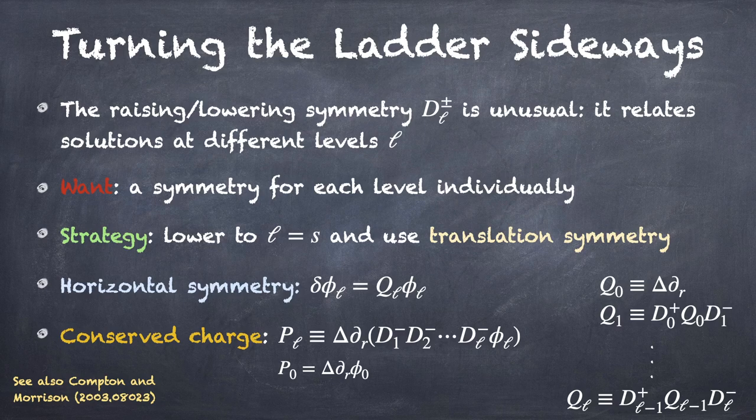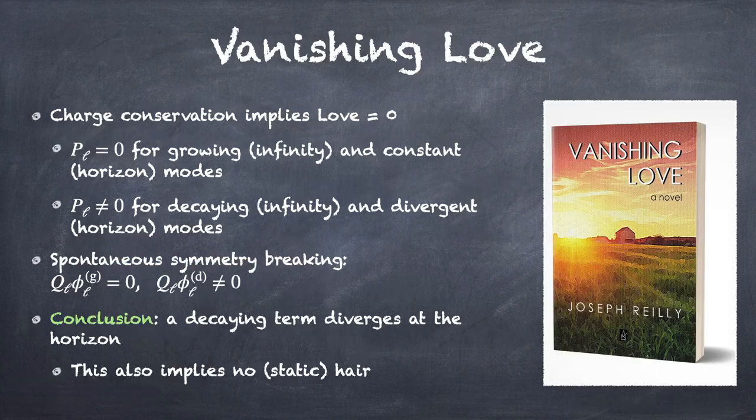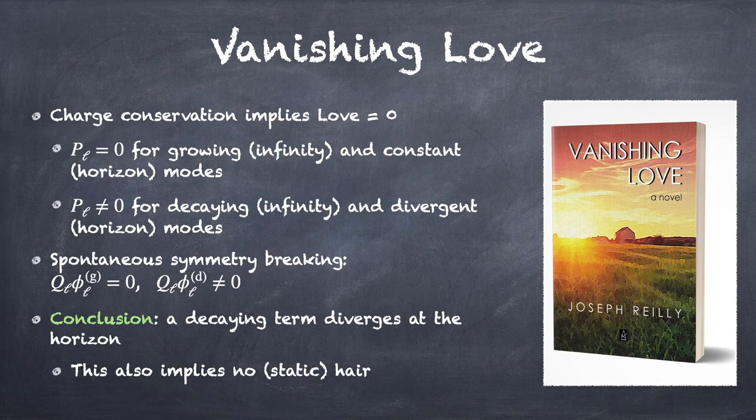And then you can do the usual Noether procedure also to find these conserved currents P_L. And from there, you get now the vanishing love numbers because it turns out that conservation of this current tells you precisely what we wanted to find before. In particular, the charge vanishes for the growing mode at infinity, but not for the decaying mode. And it vanishes for the constant mode at the horizon, but not for the divergent mode. And so by imposing a constant solution at the horizon, nothing blowing up, you get pure growing mode at infinity. And moreover, you can see this actually in terms of spontaneous symmetry breaking, but I don't think this applies in all cases.